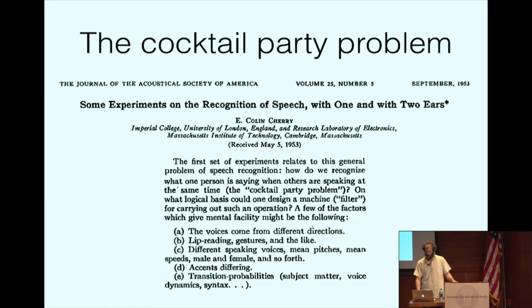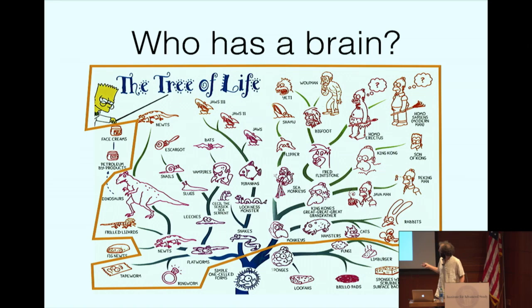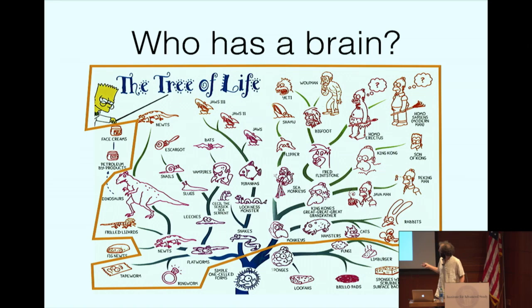Before I get into how I think the brain does these things and show some examples, we should take a step back and ask who has a brain. We can look at the Bart Simpson's Tree of Life. I don't have enough time to go through it, but it's actually quite amusing. I outlined all of the organisms here that do. It's basically all of the animal kingdom, from very low life forms like worms to humans. The organisms that don't have a brain are ones like single-celled animals, and fungus, and so on.